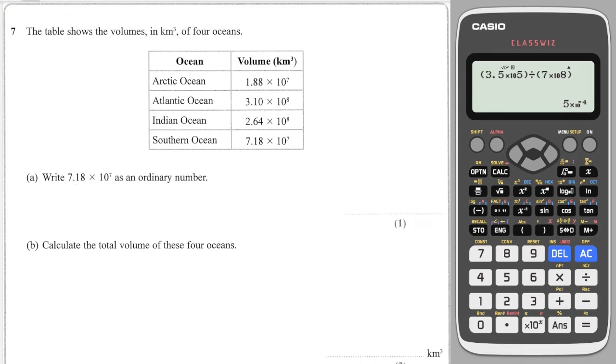Next question. We've got a little bit of context this time, but we're asked to write this as an ordinary number. So I write the number here, times 10 to the 7 means I need to move 1, 2, 3, 4, 5, 6, 7. So that's 7, 1, 8, 0, 0, 0, 0, 0, 0. Put the commas in, this tells me it's 71 million.